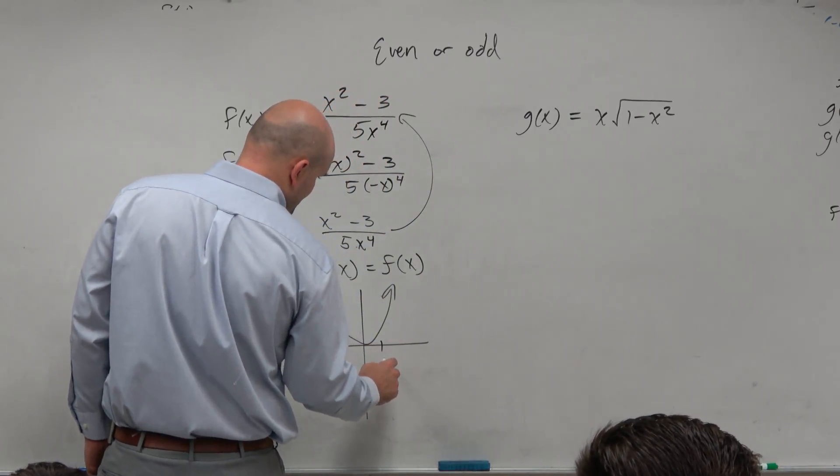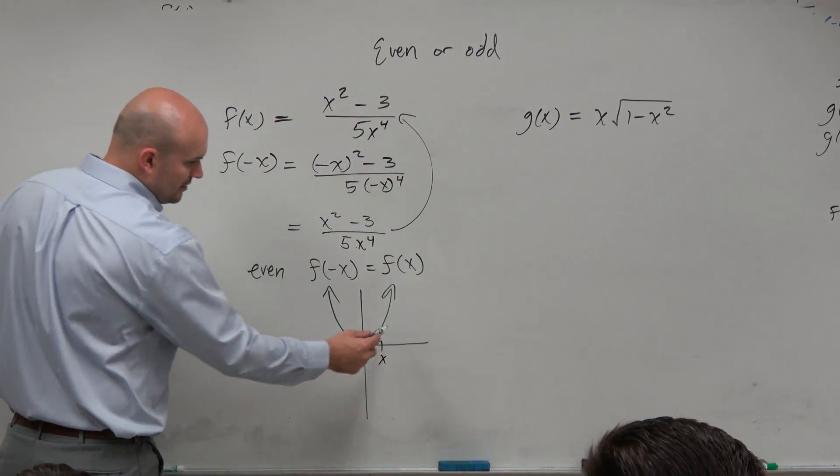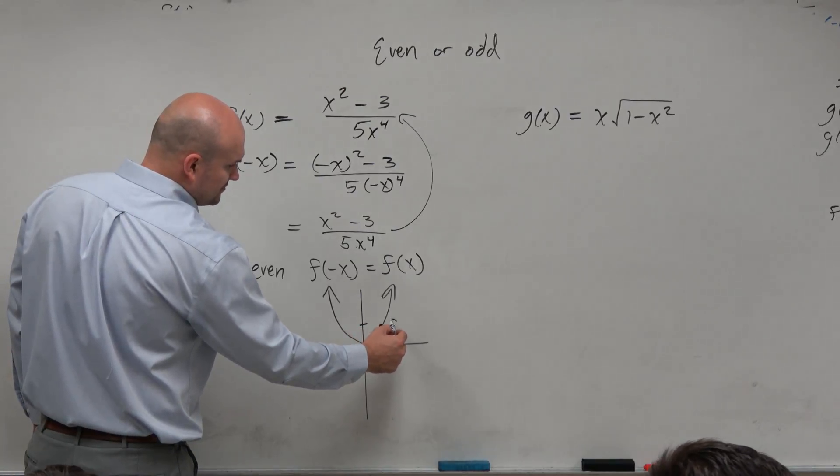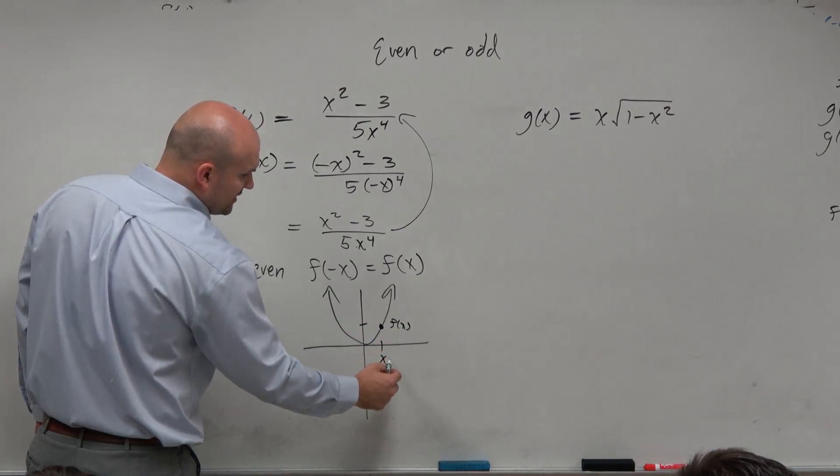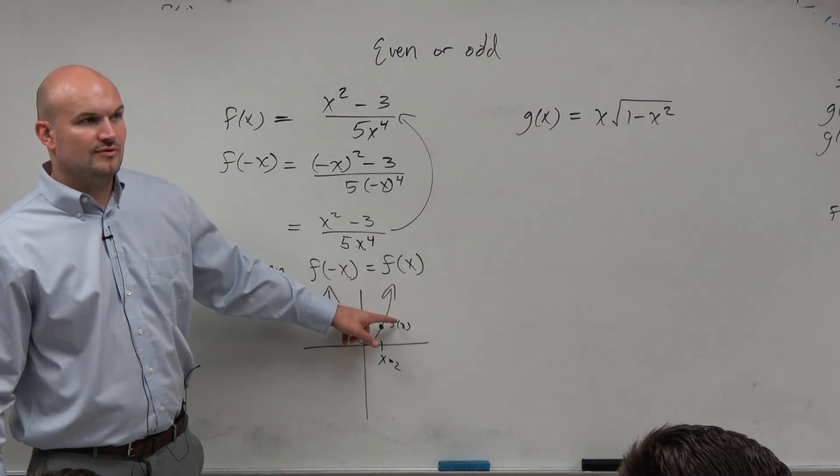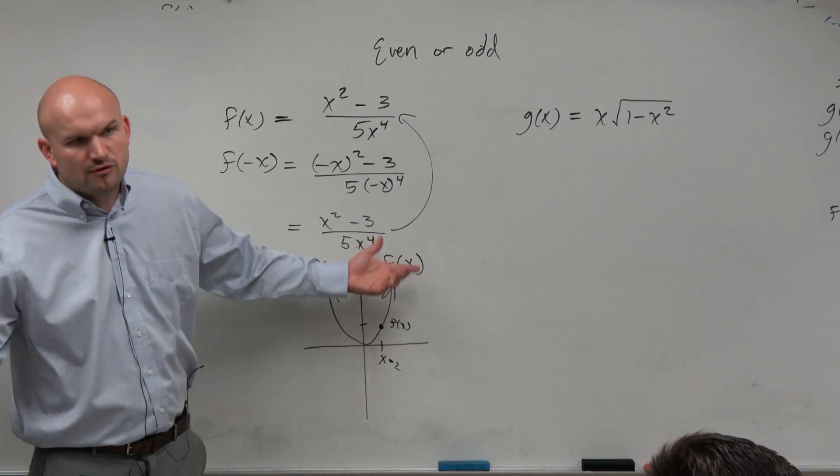So let's pretend x is right here. x squared, right? So therefore, you get some f of x value. If you guys want to use 2 for an example, that's fine. So 2 squared is equal to, yeah, but 2 squared would be 4, right?